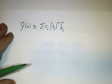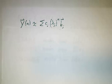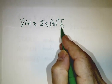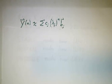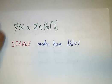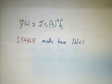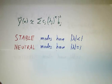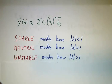Our solution is going to look like a combination of powers of lambda times the eigenvectors. We have stable modes when the eigenvalue has magnitude less than 1, neutral when the eigenvalue has magnitude 1, and unstable when the eigenvalue has magnitude greater than 1.